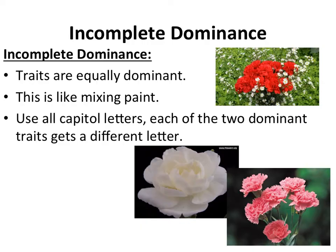The second type of gene interaction is called incomplete dominance. It's just like what it sounds — the traits, or alleles, are equally dominant. This is like mixing paint: if you mix red paint with white paint, you get an intermediate phenotype, which is pink.